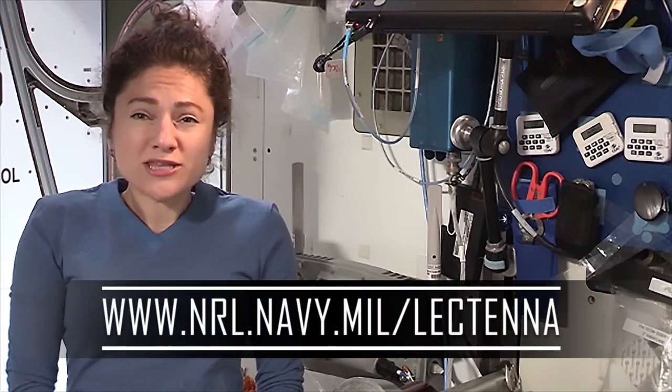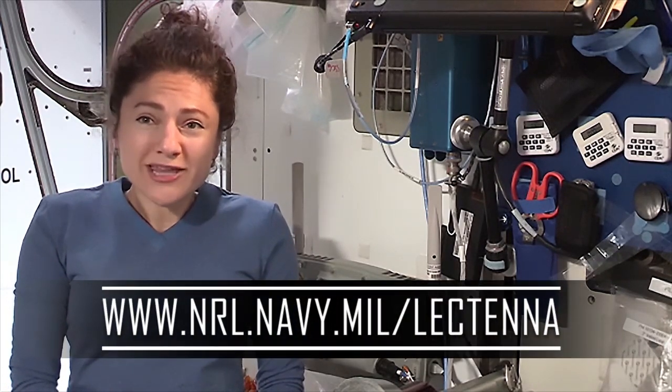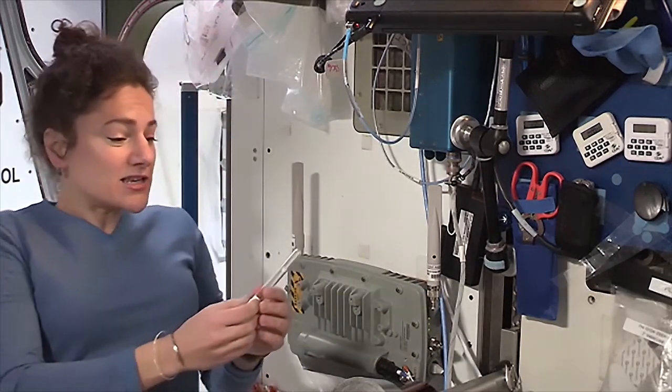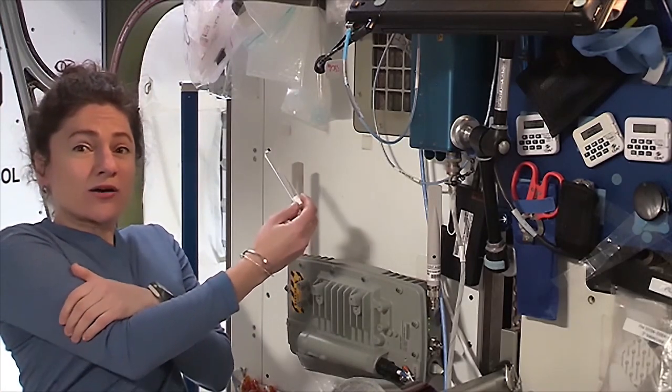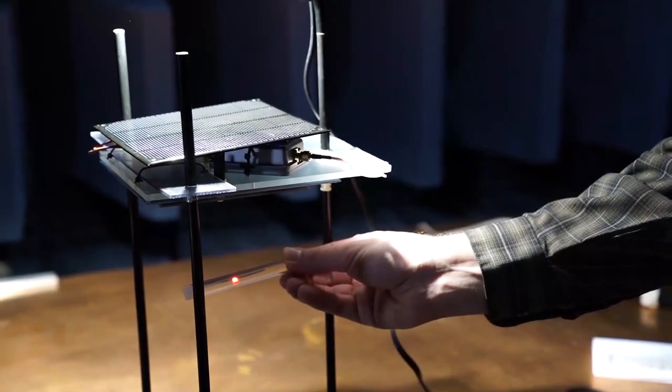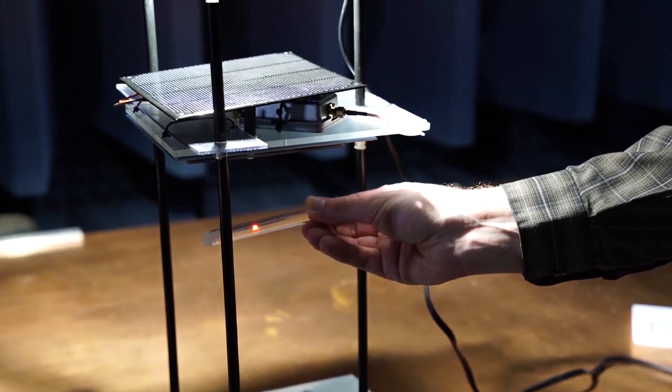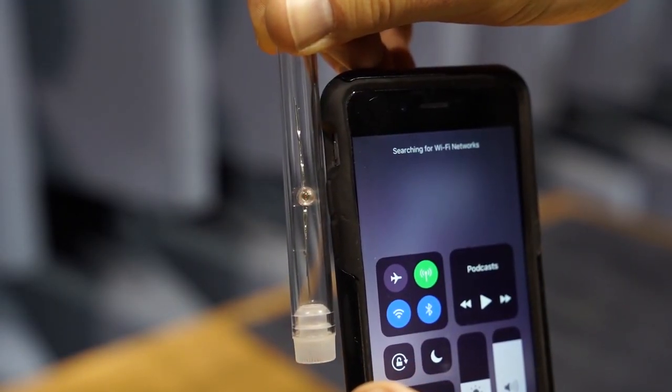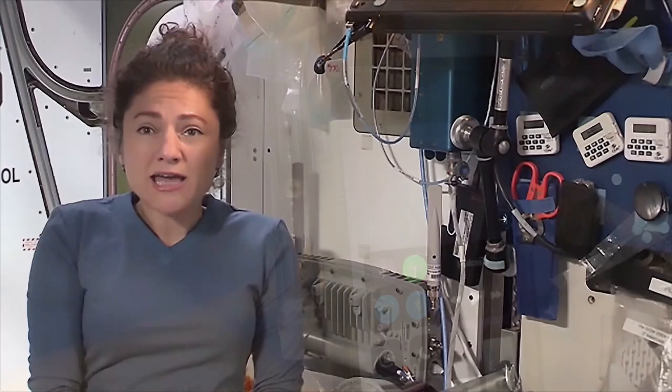If you get the components, you can easily build your own LECTENNA and try it at home. Simply place the LECTENNA near your phone's antenna or Wi-Fi router while using the internet. Depending on your phone, you may need to experiment to find where the antenna is inside it.